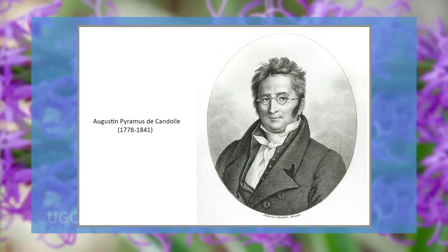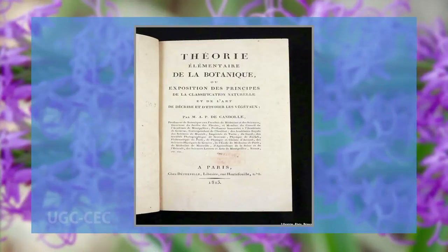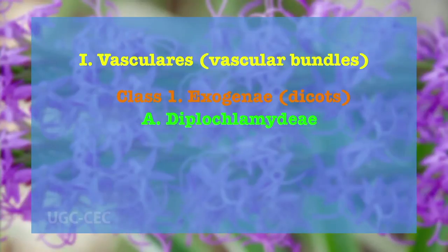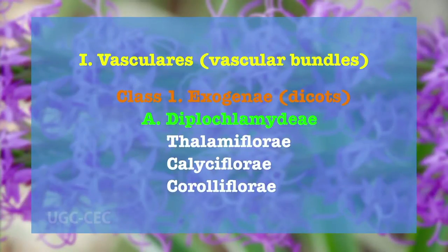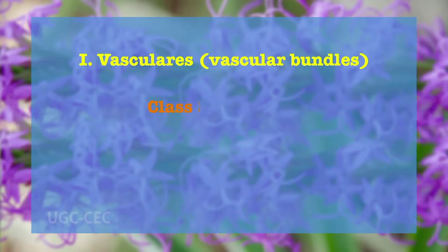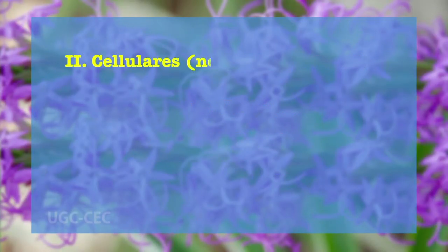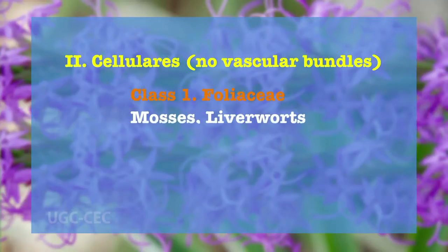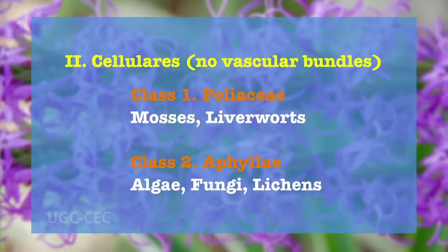The importance of anatomical features was highlighted and successfully employed in the classification. An outline of the classification proposed by A. P. De Candolle in his Théorie Élémentaire de la Botanique is: A. Vascularis — includes vascular bundles present: Class 1 Exogenous (dicots) — Diplochlamydeae including Thalamiflorae, Calyciflorae, Corolliflorae, and Monochlamydeae; Class 2 Endogenous — includes Phanerogamia and Cryptogamia. B. Cellularis — plants with no vascular bundles: Class 1 Foliacea including mosses and liverworts; Class 2 Aphyllae including algae, fungi, and lichens.